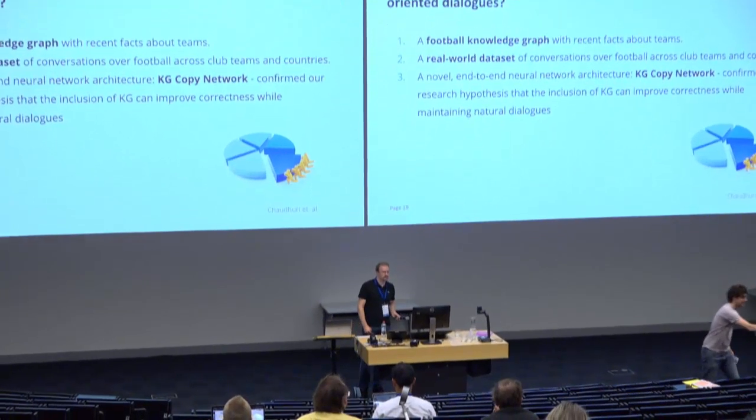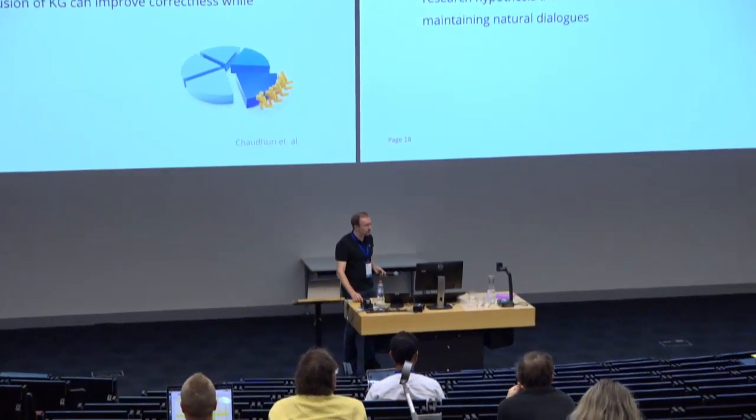I have a question about the football knowledge graph. Football is quite an ever-changing domain — coaches change and players move teams. Did you just take a snapshot of one particular moment in time, or did you model changes like events? For this particular work, we just consider one snapshot. But you could update the underlying knowledge graph and the system would still work. It is not only meant for static knowledge — we could recreate a new knowledge graph just based on our scripts and it would still work.